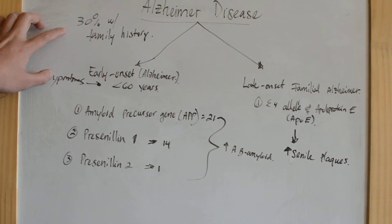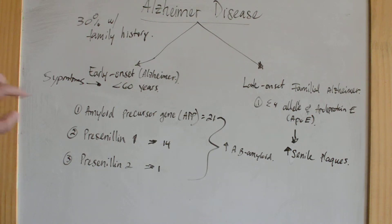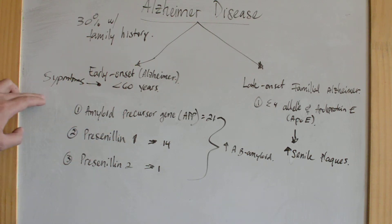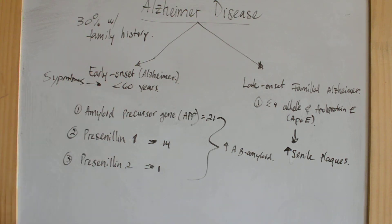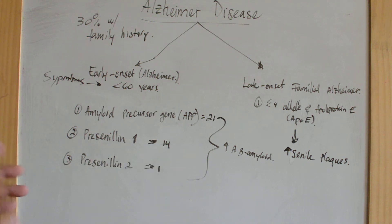According to age, when the symptoms begin, Alzheimer's disease can be classified as early or late onset. Early onset Alzheimer's disease symptoms show up before the age of 60, whereas late onset familial Alzheimer's symptoms show up after the age of 60.